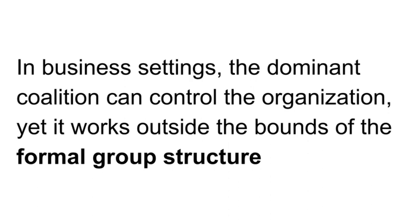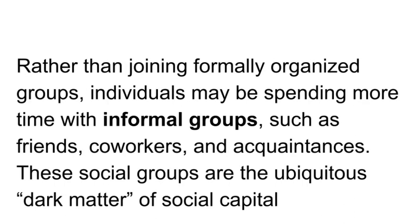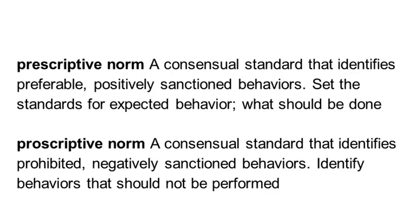Why do norms, both formal and informal, develop to regulate group behavior? Norms are implicit, self-generating, and stable standards for group behavior. We have different types of norms: proscriptive norms, prescriptive norms, descriptive norms, and injunctive norms.